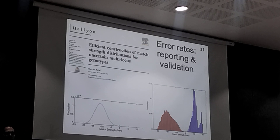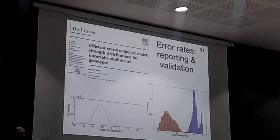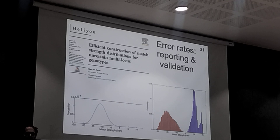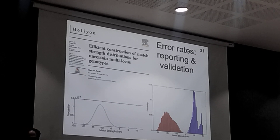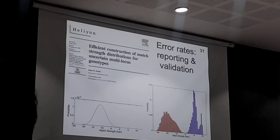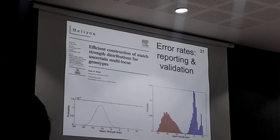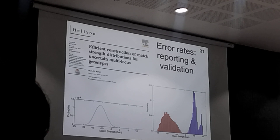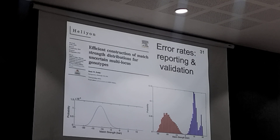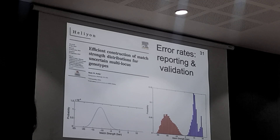Once you work out the distribution of match statistics on an evidence item, you can look at a defendant's match statistic — the area of the curve tells you the chance of making a mistake, the chance that it's somebody else at that level. We always report that now. It turns out the same method can be used for validations, using genotype probabilities instantaneously, reducing validation time from a year to a week because all the calculations are done automatically.